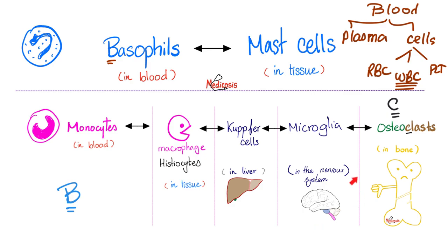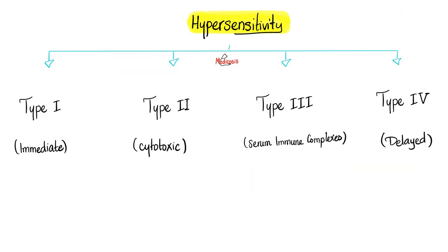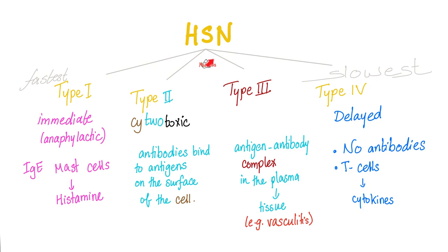I have a previous video titled hypersensitivity reactions where we talked about all of these in detail. We are in type 4 today, which is delayed hypersensitivity. Which one is the fastest? Type 1. Which one is the slowest? Type 4.